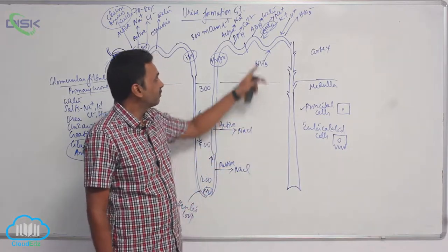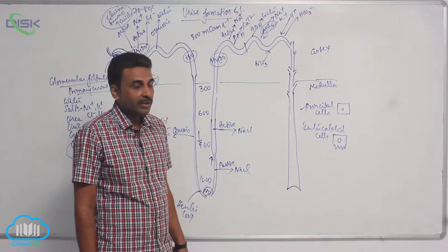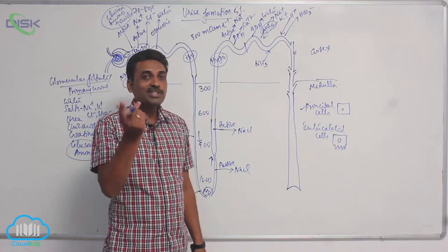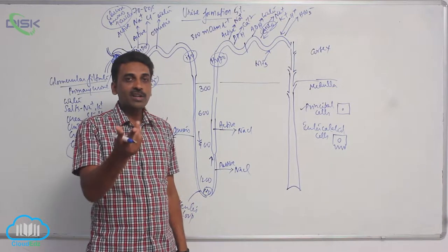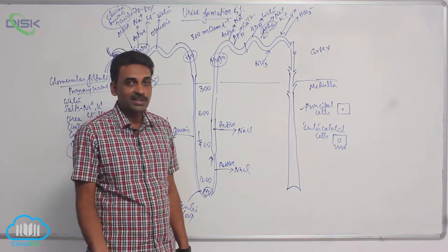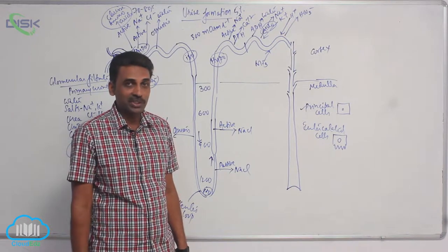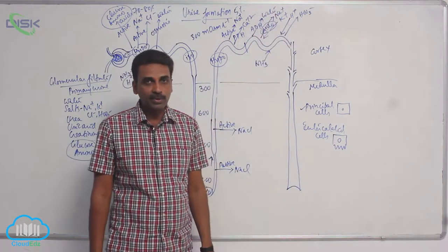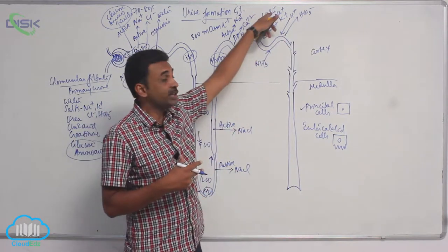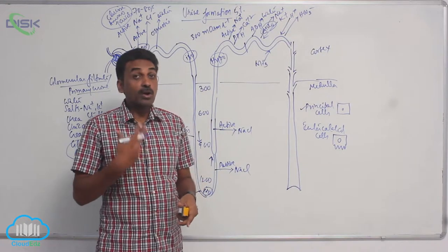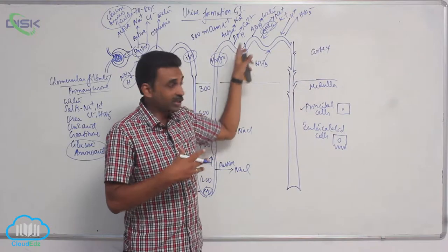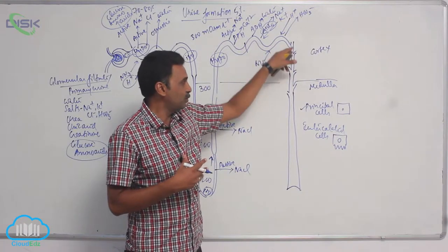Antidiuretic hormone—diuresis means dilute urine, so antidiuretic hormone prevents diuresis, it prevents dilute urine formation. That means when ADH is produced, water is reabsorbed. How much water is taken back depends upon our body requirements.